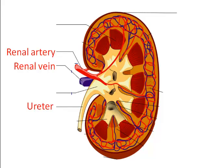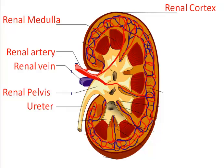Each kidney has three major regions: the renal cortex, which is the outer region; the renal medulla, the inner region; and the renal pelvis. The cortex and medulla contain an average of about one million individual filtration units called nephrons, where urine forms. They are not visible on this image.